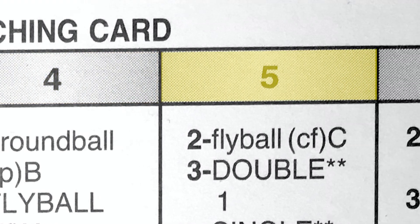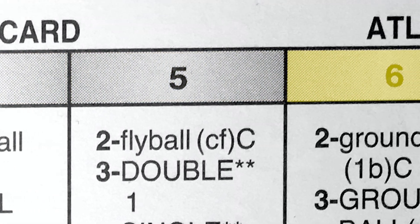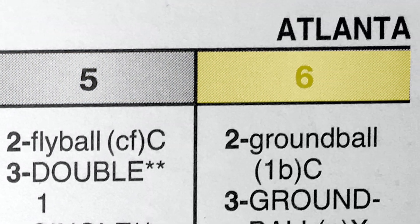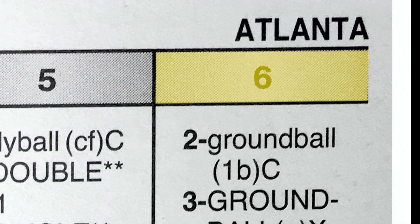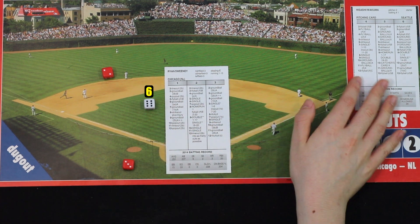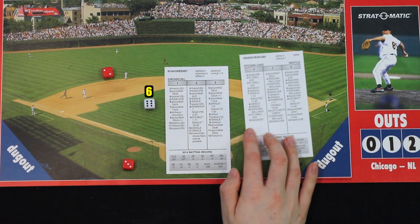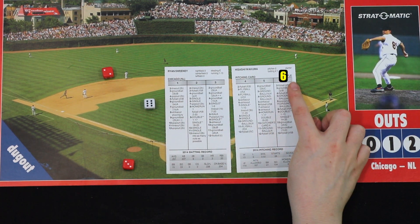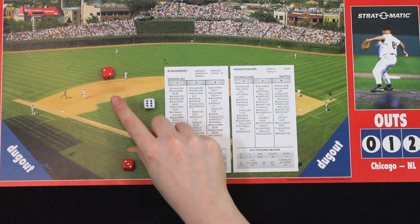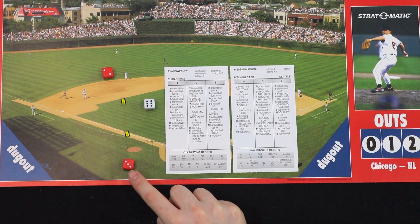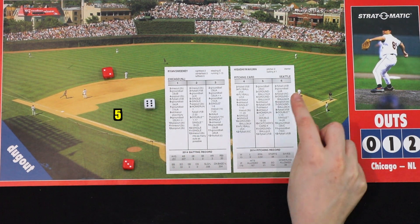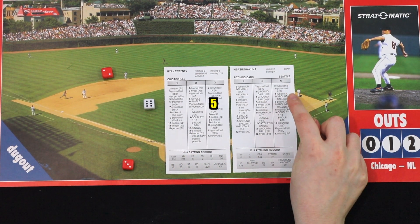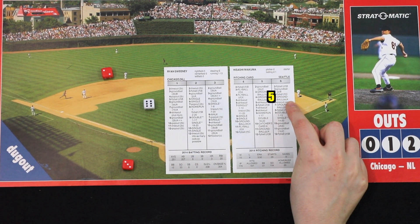Pitcher cards contain four, five, and six numbered columns. The white die determines which card and column to find the result. Add the two colored dice together to find the final at-bat result in the appropriate white die column.